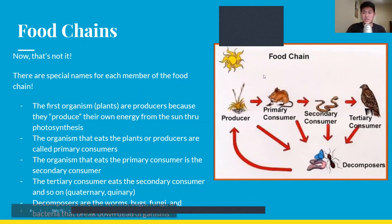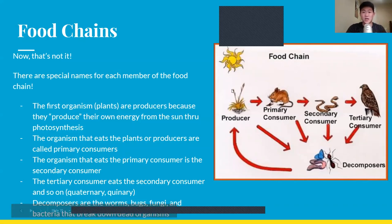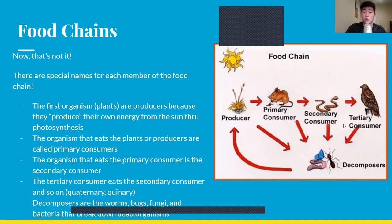As you can see, this plant is a producer because it produces its own energy from the sun's light and warmth. Then the primary consumer eats the producer — so this mouse is the primary consumer. The snake eats the mouse, so the snake is the secondary consumer, and so on.